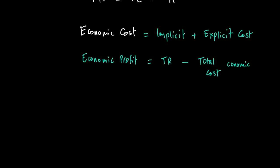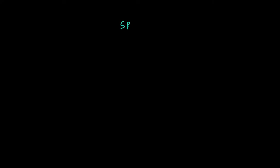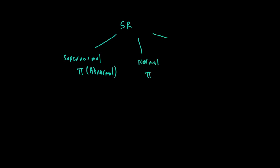In the short run, when looking at profitability, a firm can have three kinds of profits. One is what we call supernormal profit, another word for which is abnormal profit. Another is normal profit, and the last is economic loss. Normal profit is simply the idea that total revenue minus total cost equals zero — in other words, revenue equals all the opportunity cost of the resources used in production by the business.